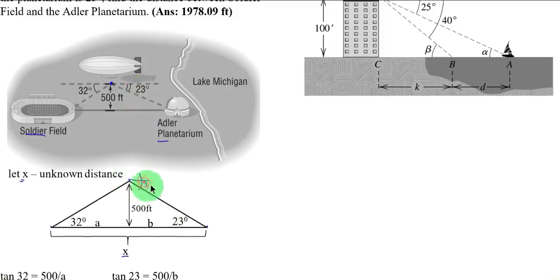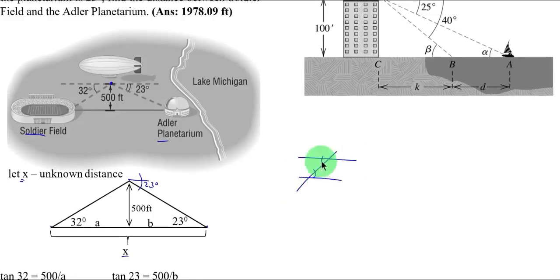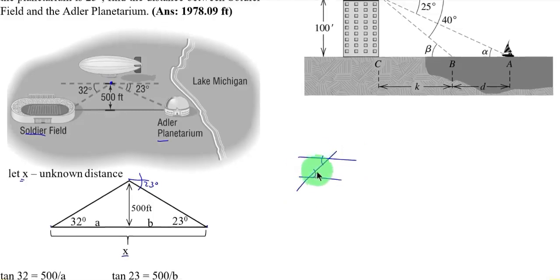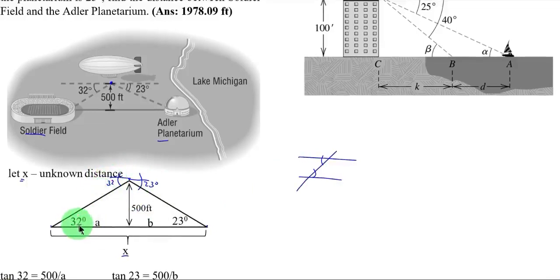So the concept we applied here is the concept we discussed last time. We have parallel lines and a transversal. So these angles are equal. So this is 23, so therefore this is 23 also. Similarly, if this is your 32 degrees, so therefore this is also 32.